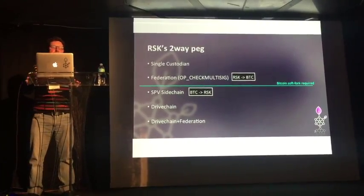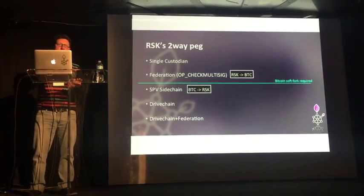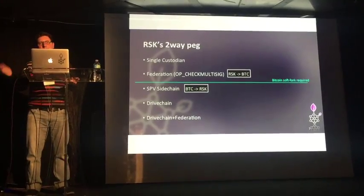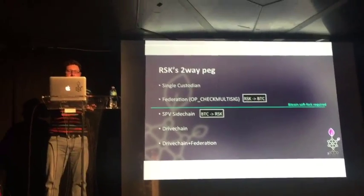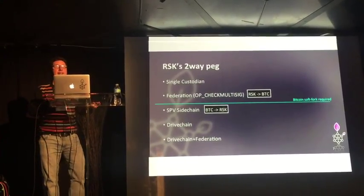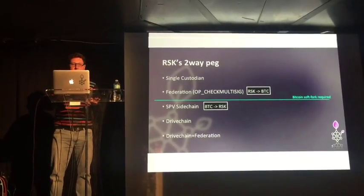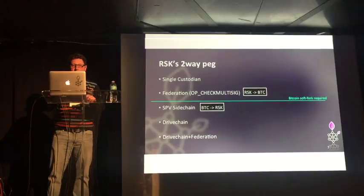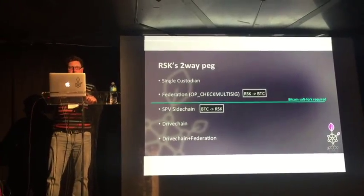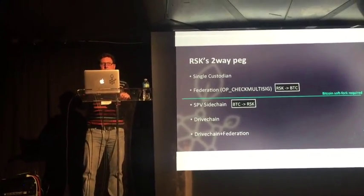Our implementation of the two-way peg is a hybrid implementation. We use one mechanism to transfer funds from Bitcoin to RSK, and another mechanism to send them back. To send funds to RSK, we use an SPV sidechain — an idea that was generated or popularized by Blockstream, and we use that plus some minor changes. To send money back, we use a federation.